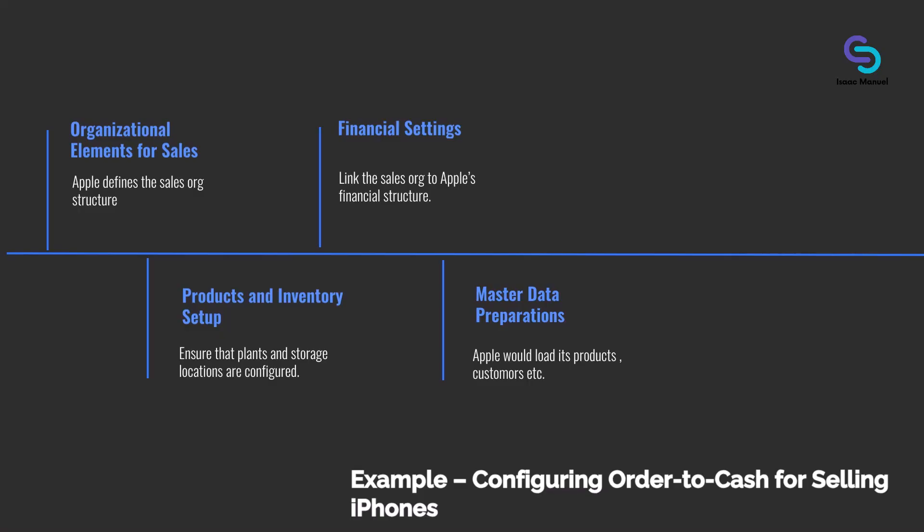This is followed by master data preparations. Though master data is not exactly configuration, it's worth noting in context. Apple would load its products — material master data for each iPhone model — customers like individual Apple Store customer records or online customer master data, and pricing conditions — prices for each iPhone model. Configuration ensures the structure is ready. For example, setting the pricing procedure that ties customer, sales area, and product to a price list.